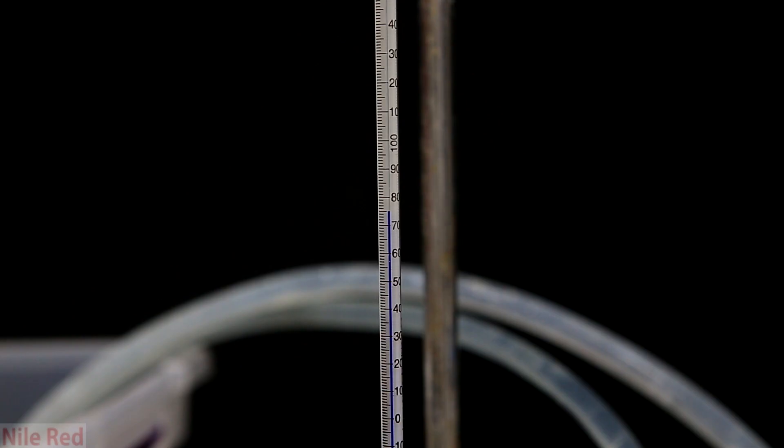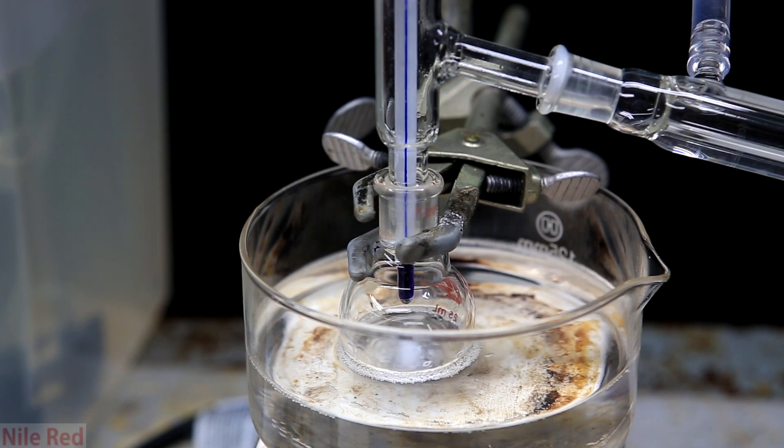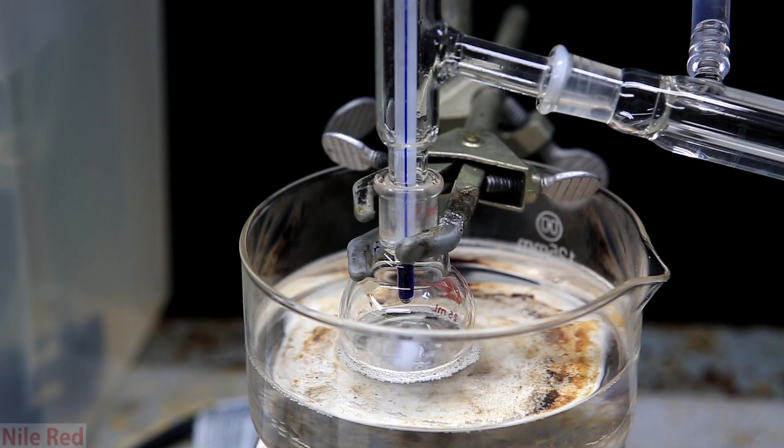Then a very small amount of stuff came over at around 75°C which I assumed to be benzene. After that I quickly slid down the thermometer so it was practically inside the round bottom flask.